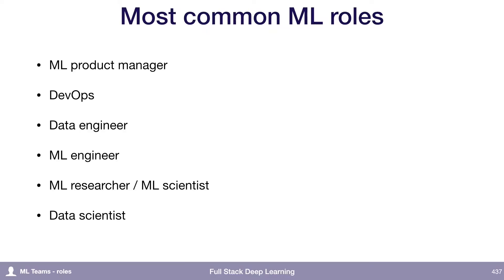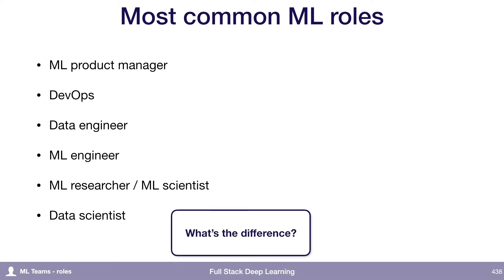Starting with roles, these are the most common machine learning roles that we see these days. You have machine learning product managers, DevOps, data engineers, ML engineers, ML researchers, and data scientists. All of these are roles that you might see on a machine learning team. So the question is, what's even the difference between all of these things?